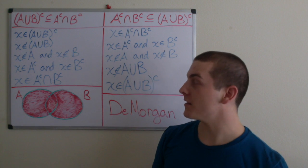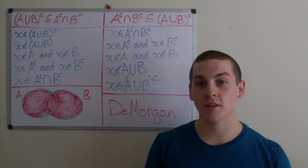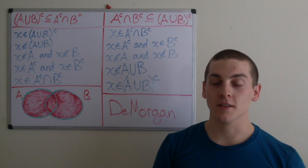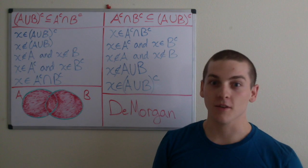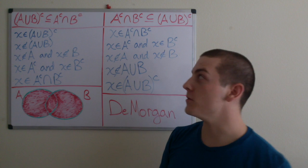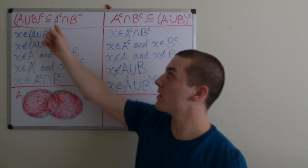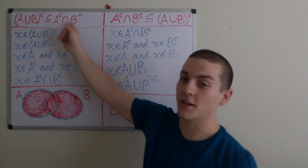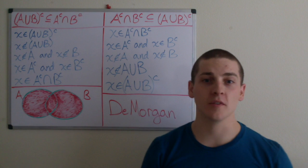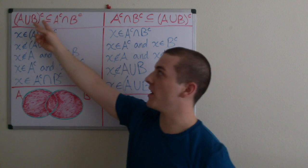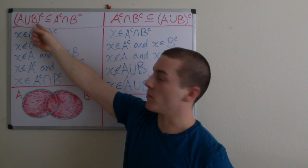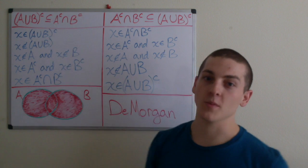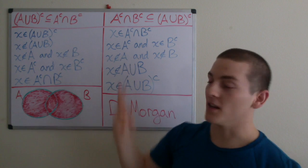We're going to prove that the complement of the union of A and B is, in fact, equal to the complement of A intersected with the complement of B. To do this, we have to show that the complement of A union B is a subset of A complement intersect with B complement, and vice versa.